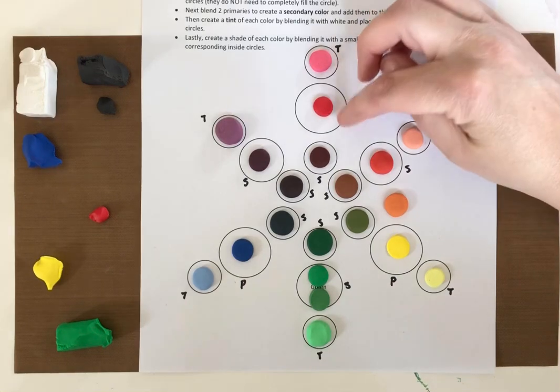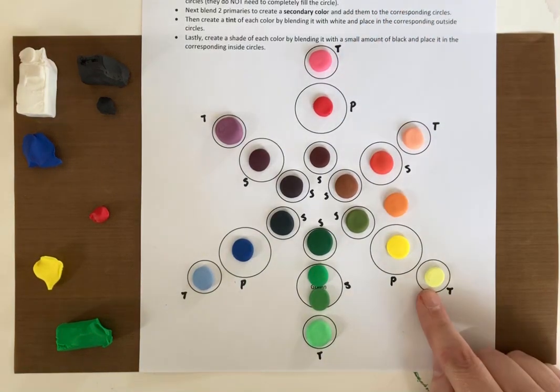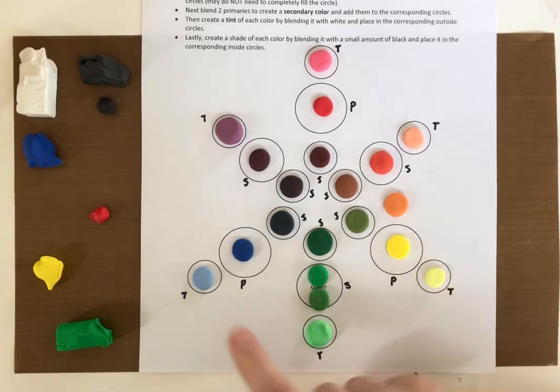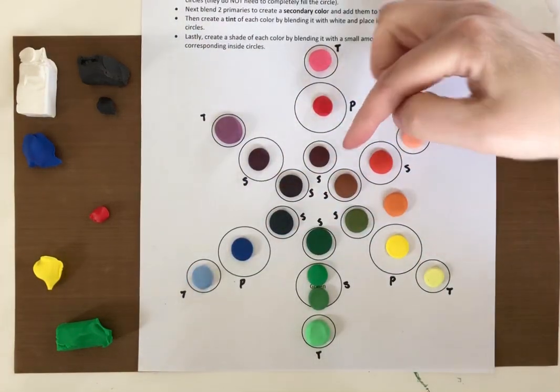And then I did a tint of each one, so I've got the pink, I've got the light orange, I've got the light yellow, the light green, light blue and light purple, and I have all of the shades.